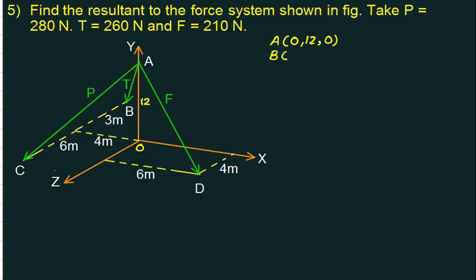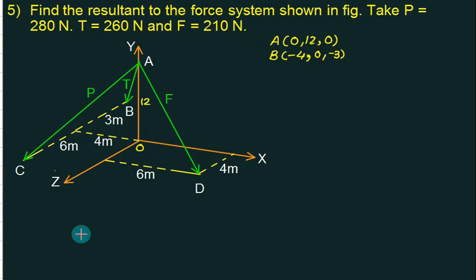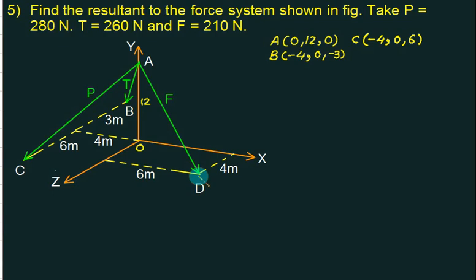For point B, traveling along x gives minus 4, z gives minus 3, and y is 0, so coordinate of B is (−4, 0, −3). For point C, traveling along x is minus 4, and along z is positive 6, so coordinate of C is (−4, 0, +6).